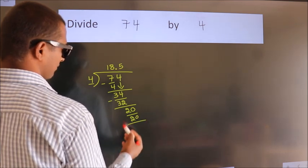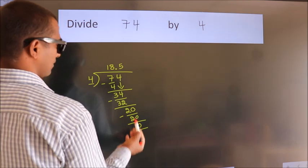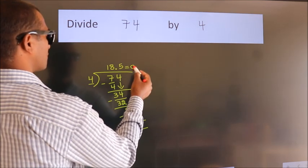Now we subtract. We get 0. We got remainder 0. So this is our quotient.